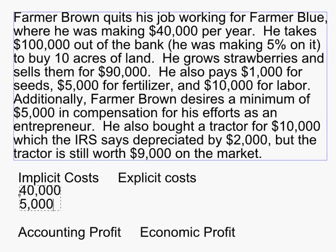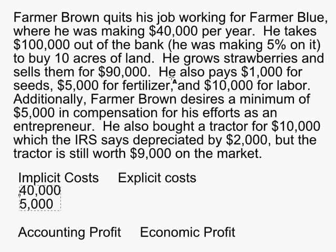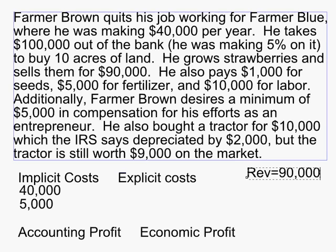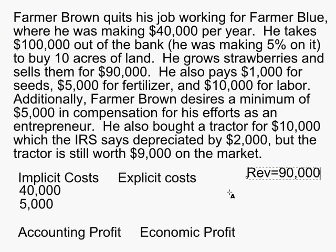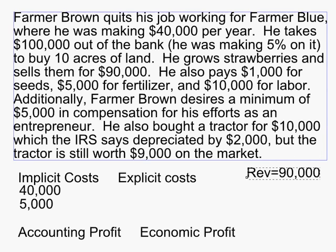He grows strawberries and sells them for ninety thousand dollars. That's not a cost — that's actually his revenue. So we can put that over here: total revenue equals ninety thousand dollars. Maybe that's nine dollars per pound for strawberries and he sold ten thousand pounds. So that's his revenue, not a cost at all.